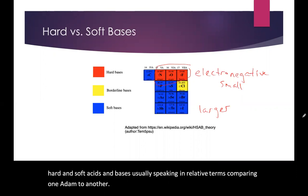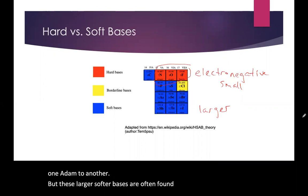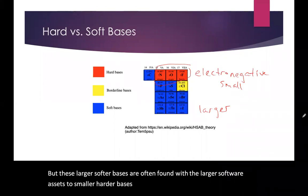But these larger, softer bases are often found with the larger, softer acids. The smaller, harder bases are often found with the smaller, harder acids.